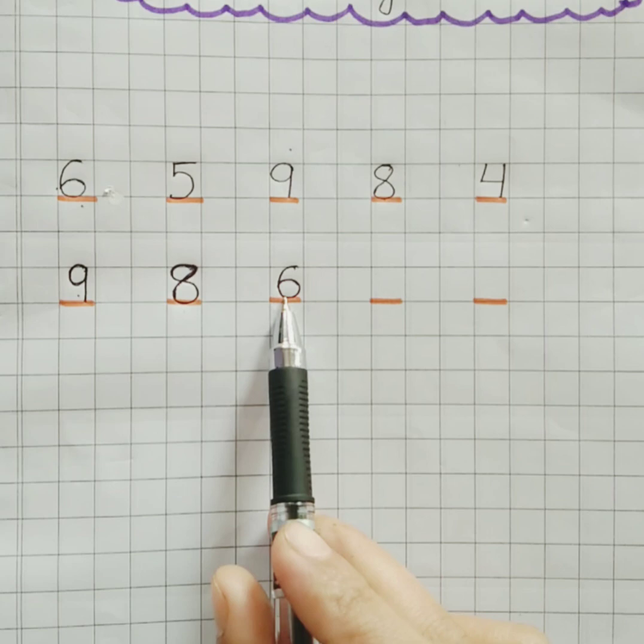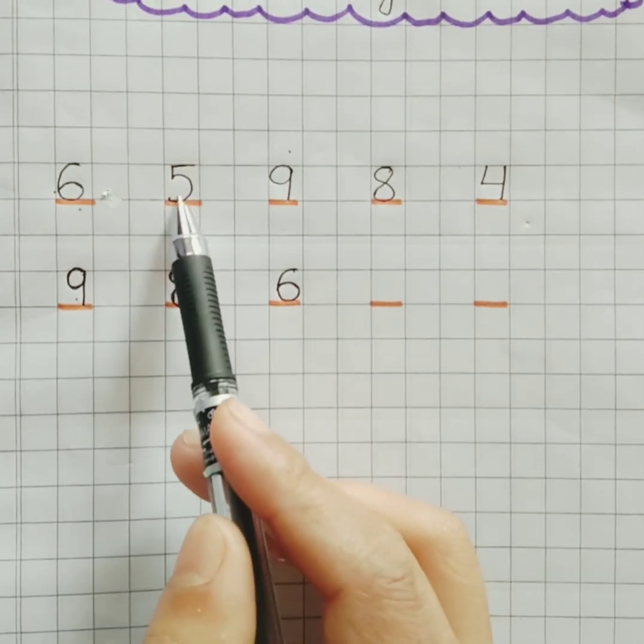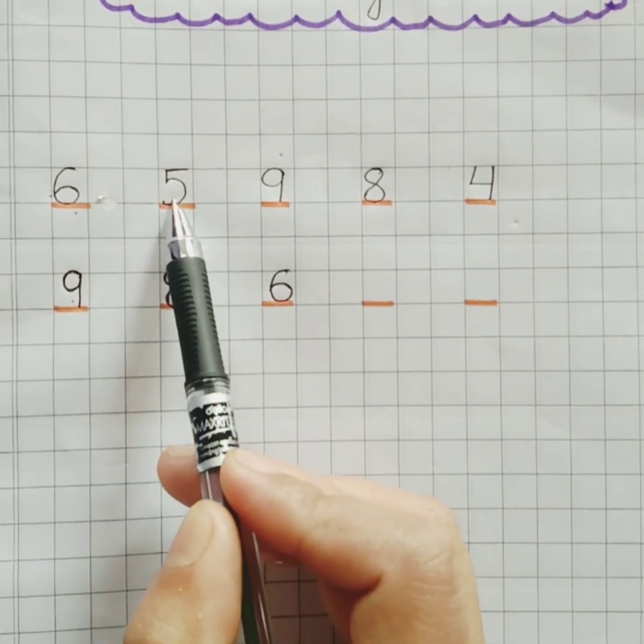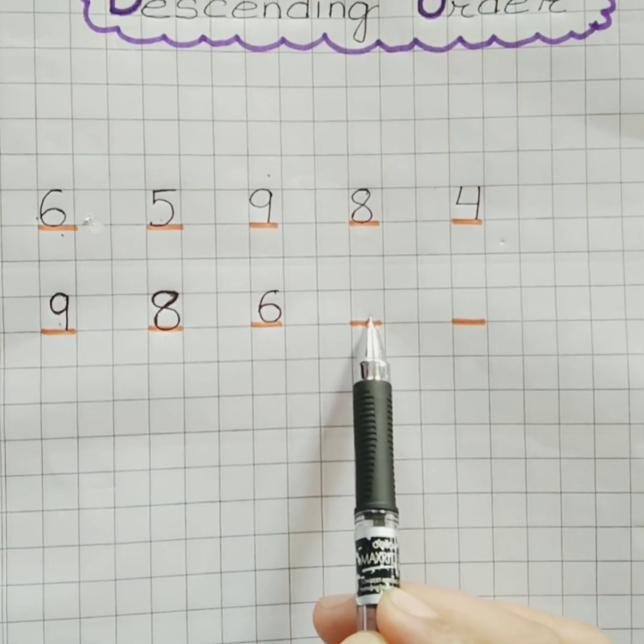So after 6, which is the largest? Yes, number 5. So we'll write number 5 next to 6 here.